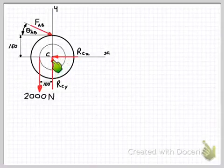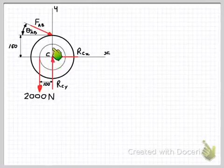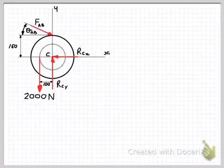So in this case if we take moments about point C, these two forces are going to pass through point C. So they'll have a zero moment effect and we'll just be left with the force AB as our only unknown. So let's do that.